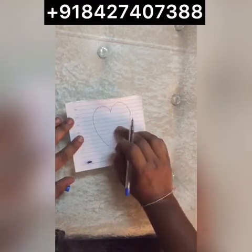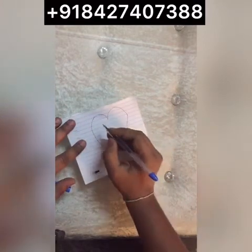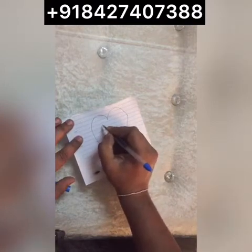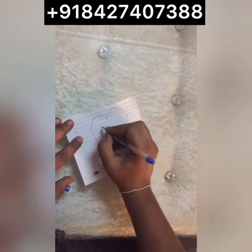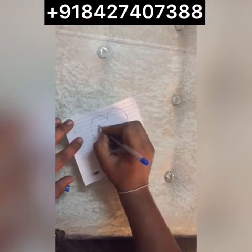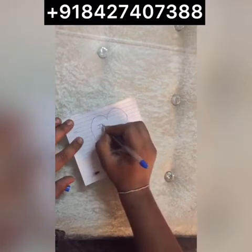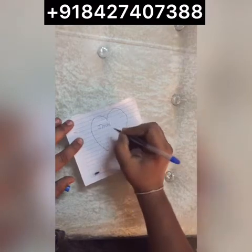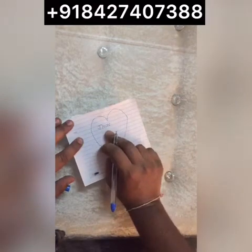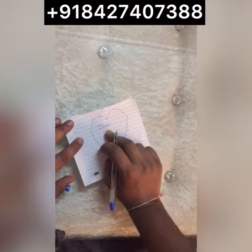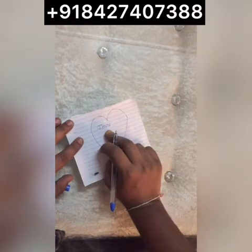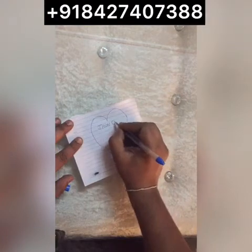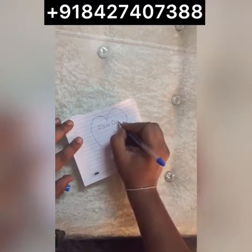So to do this spell, you have to make a big heart like this. You have to write your lover's name in the first place. For example, if his name is John — like you are a girl doing this spell — you have to write your lover's name. For example, his name is John; you have to write his name on the first place, like 'John'. After that you have to make a sign of a break.